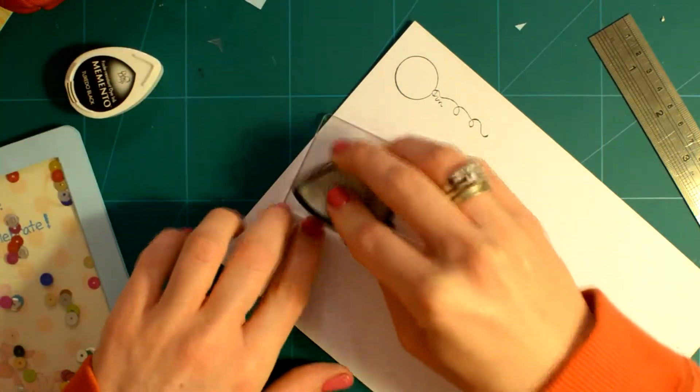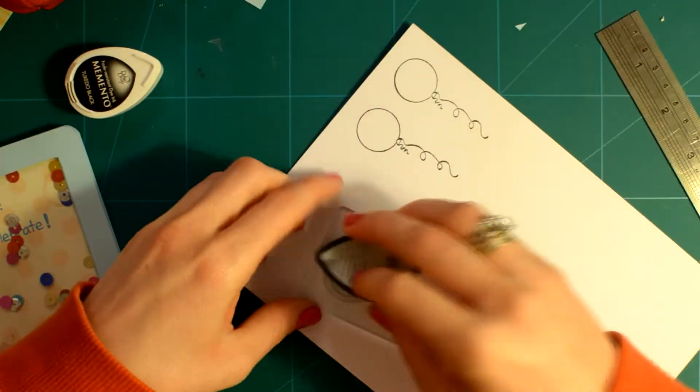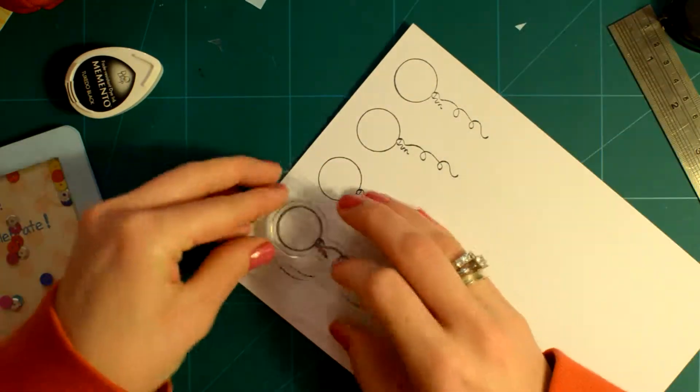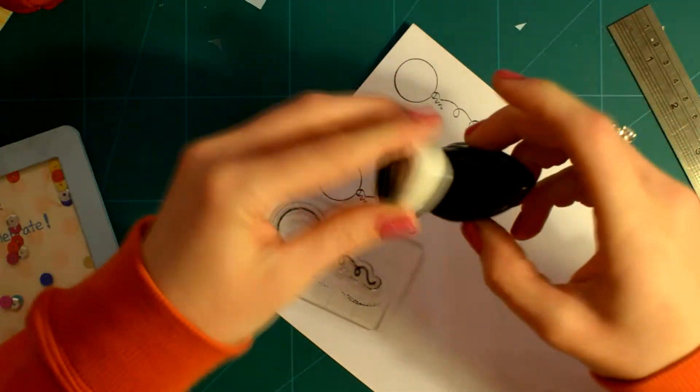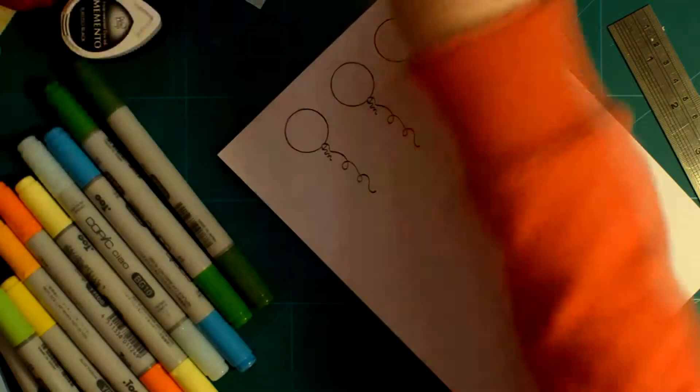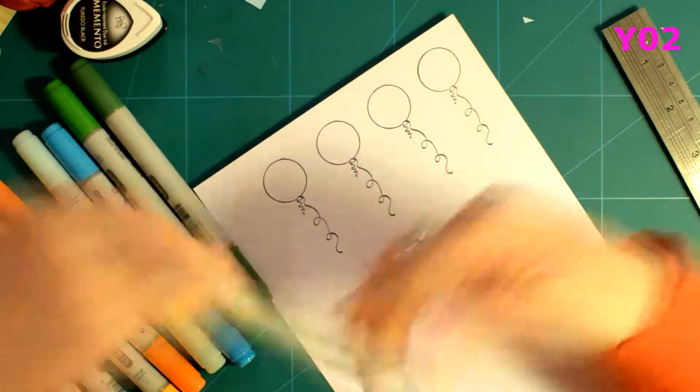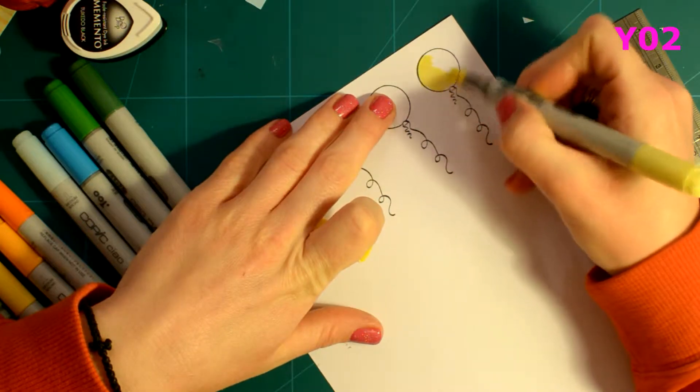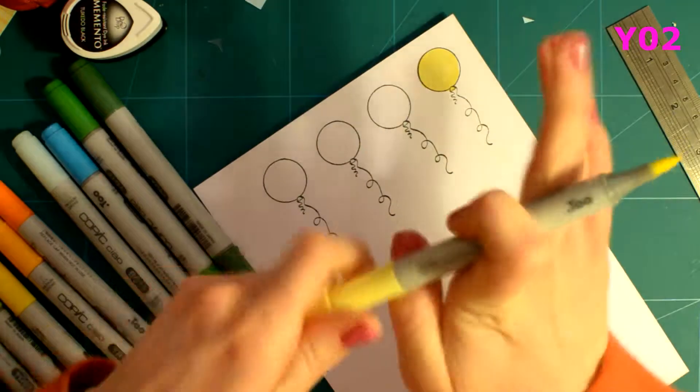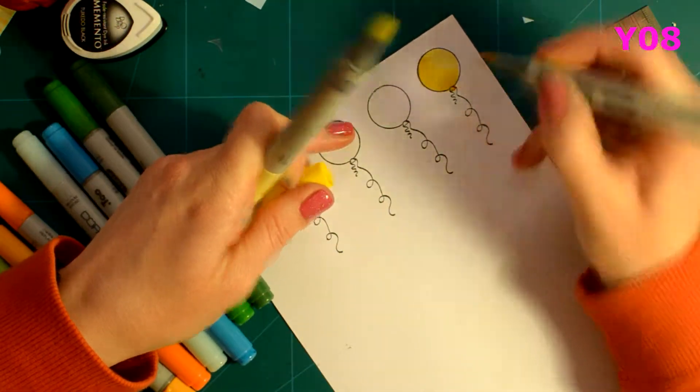I stamped 4 times the balloon and decided to color it with Copic markers. I chose to use two shades of each color: green, orange, yellow and blue. Starting with the lightest, then the darkest and then once again the lightest in order to blend the two together.